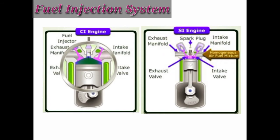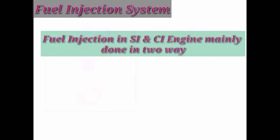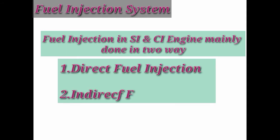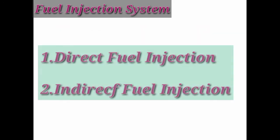Fuel injection in SI and CI engines is done mainly in two ways. The first one is direct fuel injection system and the second one is indirect fuel injection system. Now we discuss these two injection systems in brief.